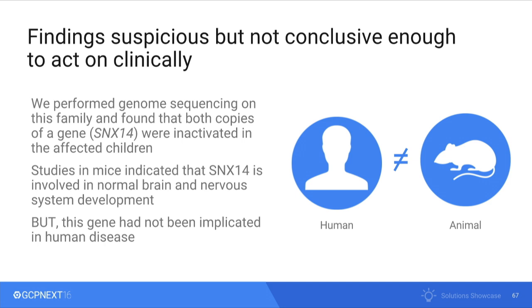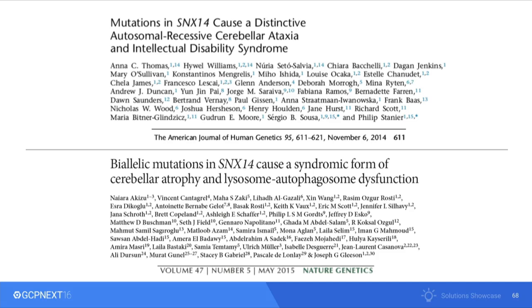These were two siblings with very similar clinical findings — progressive cerebellar ataxia, a lack of control during voluntary movements such as walking or picking up objects, associated with atrophy of the cerebellum, along with intellectual disability. We performed genome sequencing and identified two inactive copies of the SNX14 gene. Although suspicious, this was insufficient to act on clinically because the gene had not been previously implicated in human disease. Through a hallway chat, we learned of another group that had observed 20 cases with very similar findings, all also having two inactive copies of SNX14.